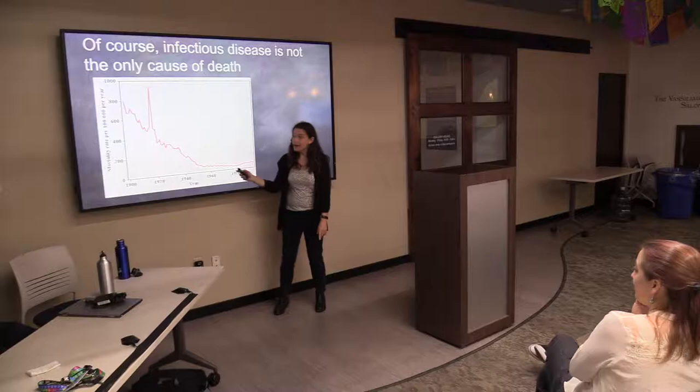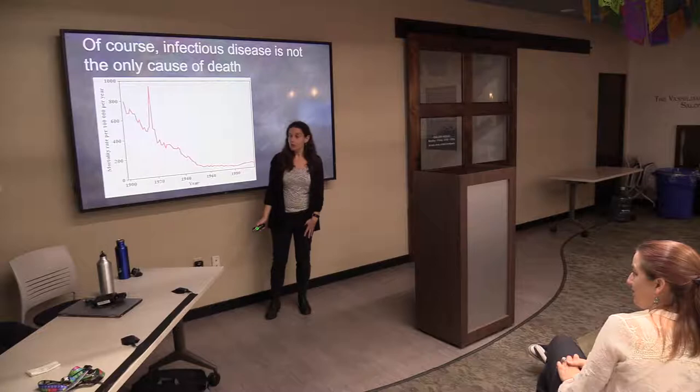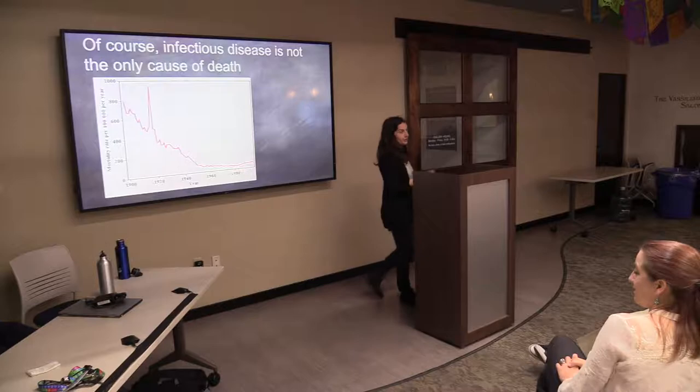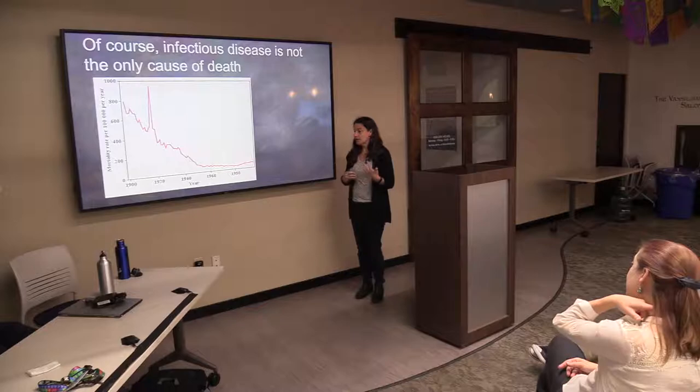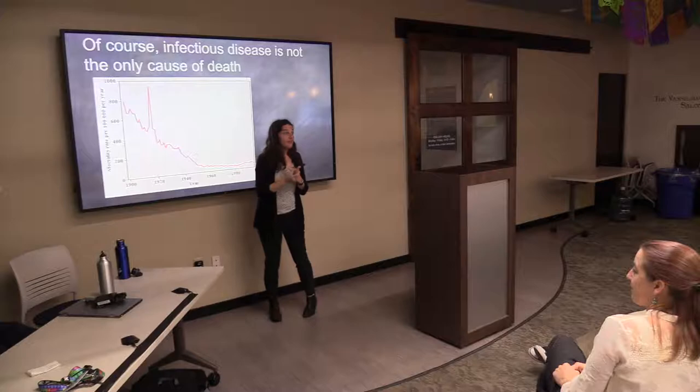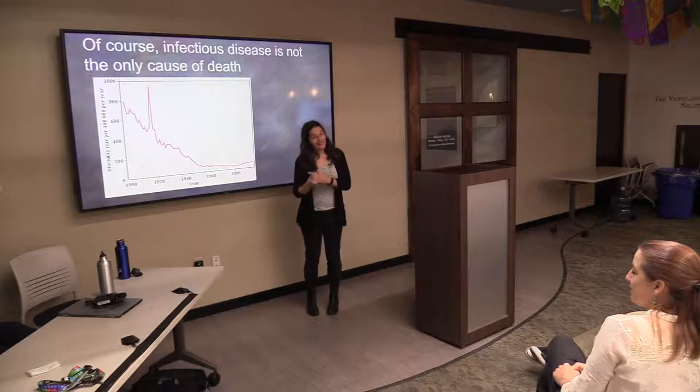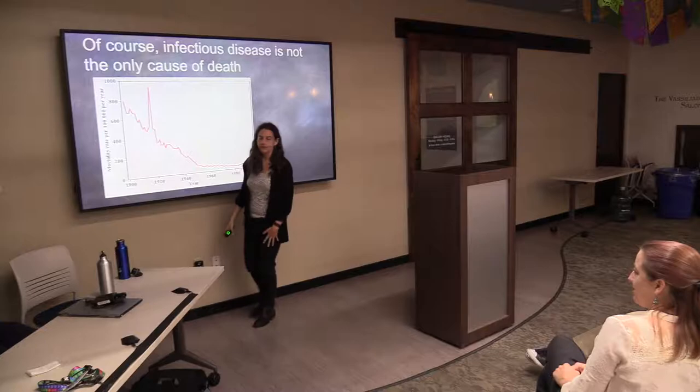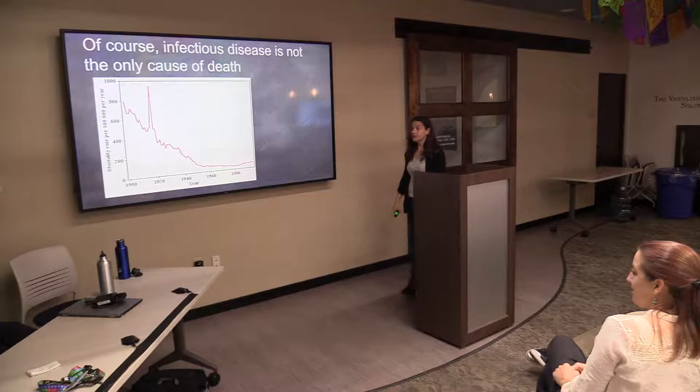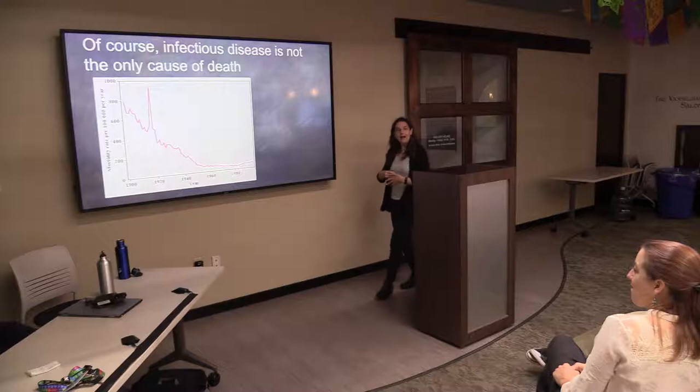I'm just talking about infectious disease here, and of course infectious disease is not the only cause of death. This graph shows the mortality rate due to infectious disease in the US over the 20th century. You can see it has dramatically declined due to advances in health technologies: understanding germ theory and knowing to wash our hands, development of antibiotics — which are starting to not work now — and then vaccines, which are still working well. You can see a huge peak due to Spanish flu. Mortality from infectious diseases has actually dropped off quite rapidly.